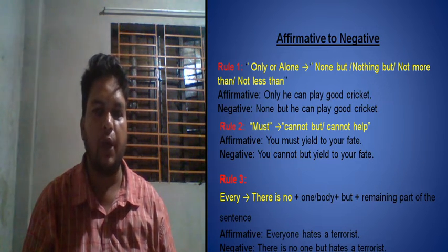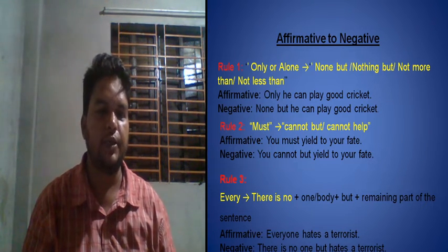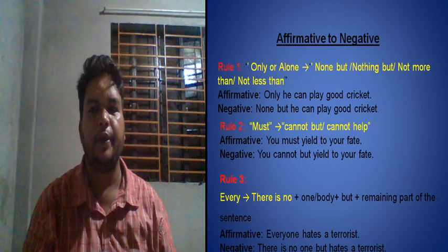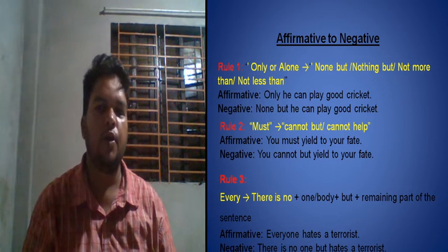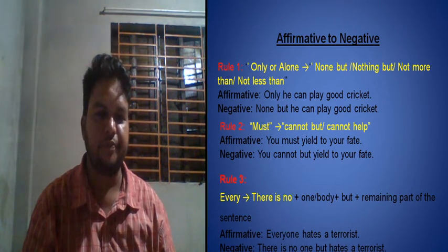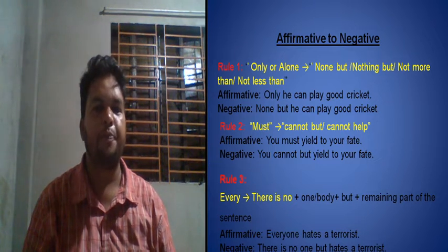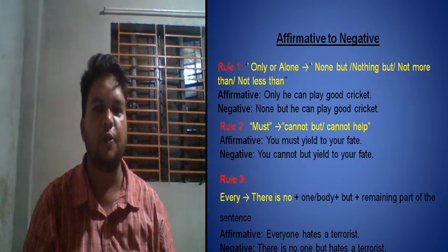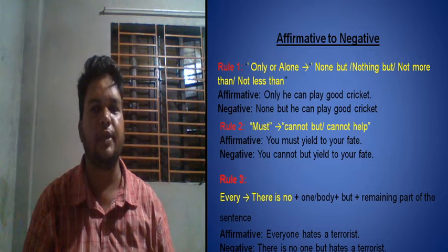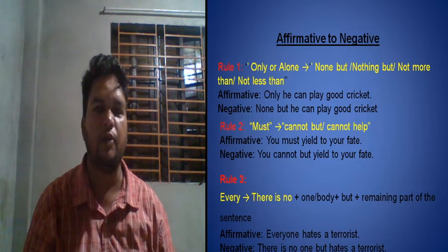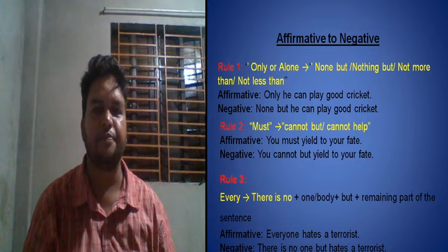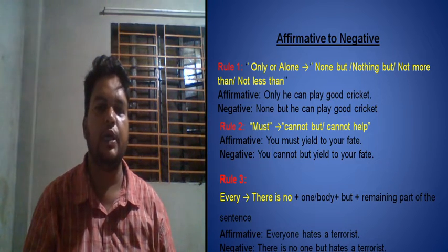Rule one: if you find 'only' or 'alone' in an affirmative sentence, to change it to negative we will use 'none but', 'nothing but', 'not more than', or 'not less than'. In the case of a person, we use 'none but'. For an object or material, we use 'nothing but'. For numerical values, we use 'not more than' or 'not less than'.